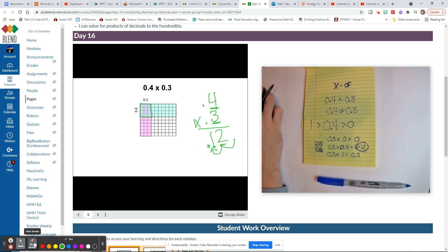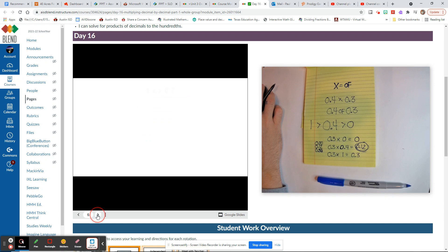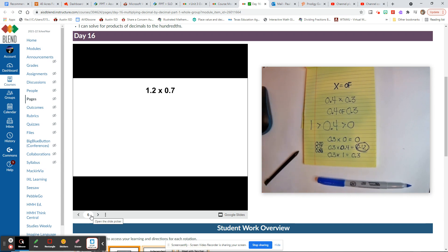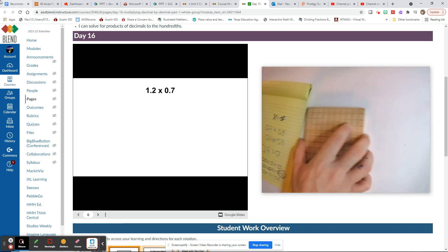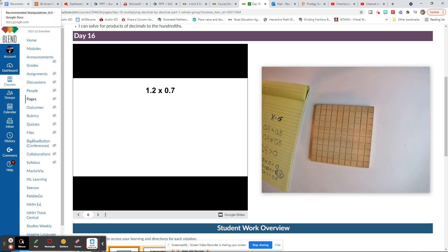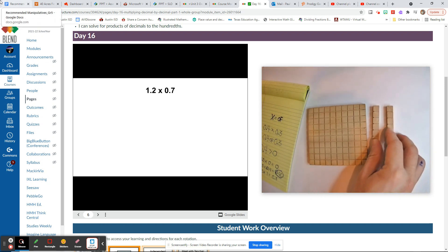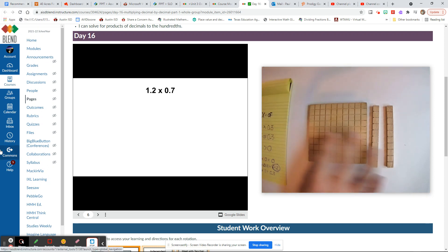All right, so we got one more to look at. We have 1.2 times 0.7. This is going to be a little bit different. Instead of just sitting there with one whole, you're going to have one whole and two tenths, and you can still do the basket weaving method with a picture in this situation.